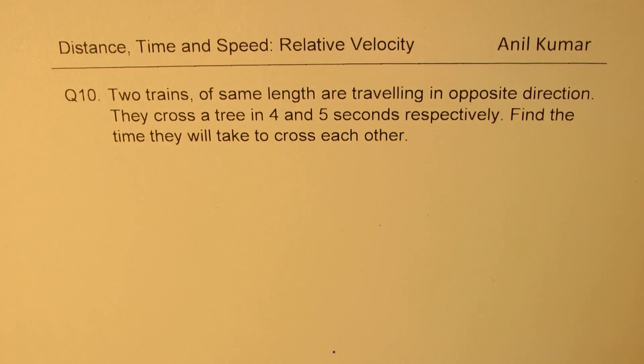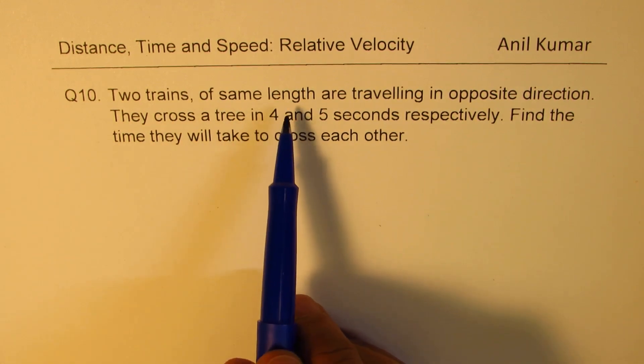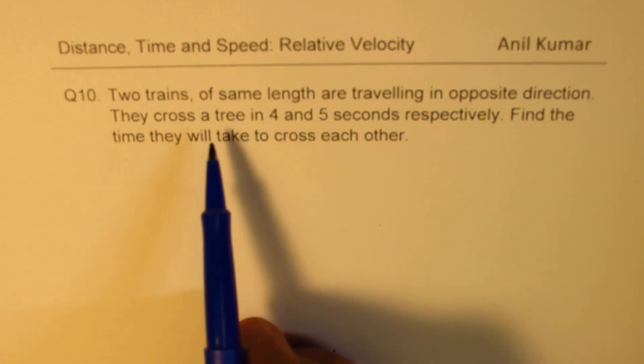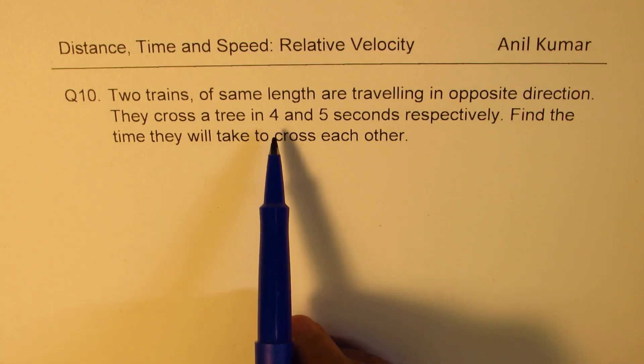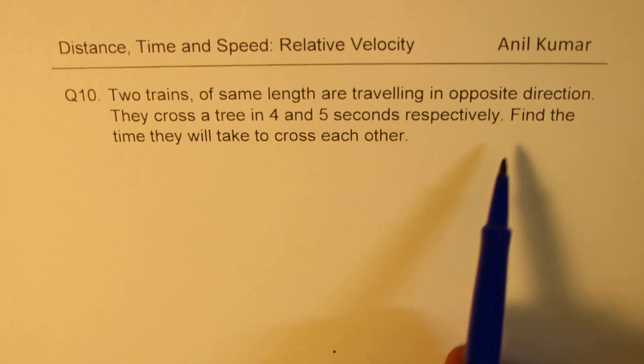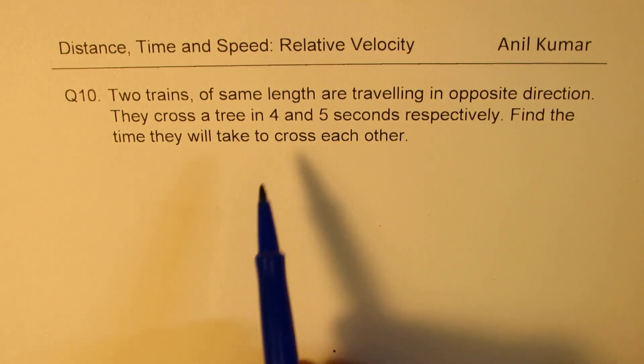You can always pause the video, answer this question, and then look into my suggestions. The question here is: two trains of same length are traveling in opposite directions. They cross a tree in 4 and 5 seconds respectively. That means their speeds are different. Find the time they will take to cross each other.